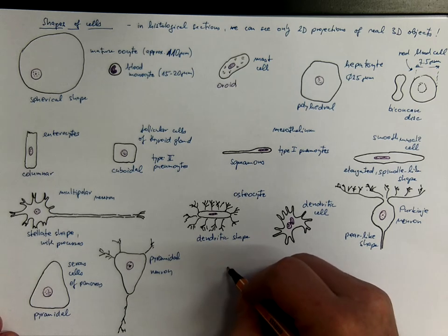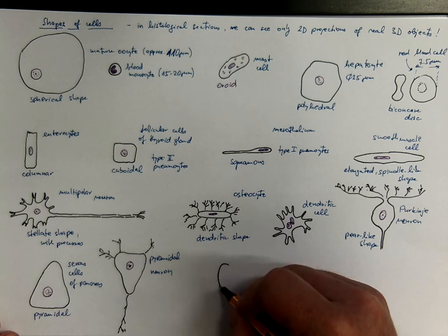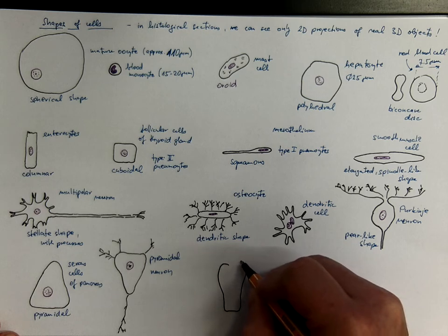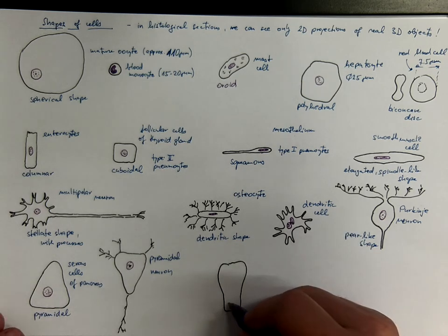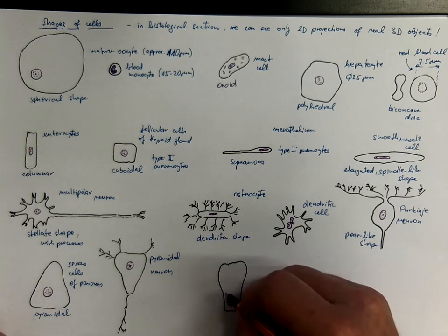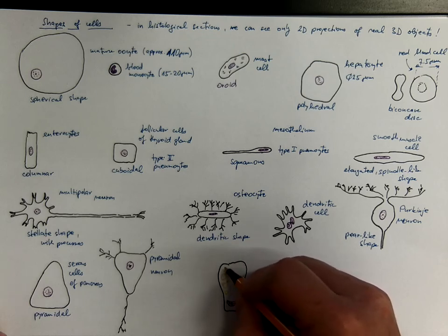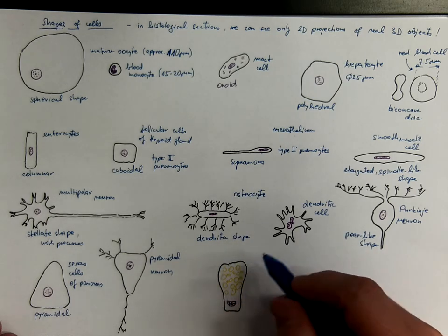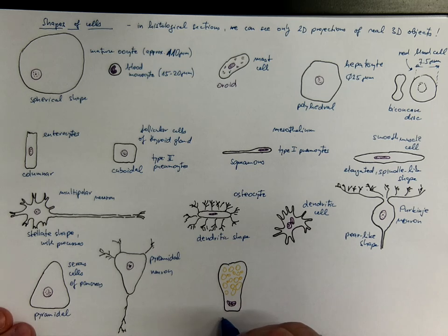Another shape would be the one with a narrow basal compartment and somehow dilated apical compartment. Here we got somehow compressed nucleus because most of the cytoplasm is filled with granules of mucin. And they resemble a goblet. So they are called goblet cells.